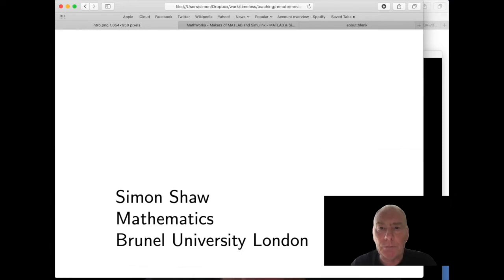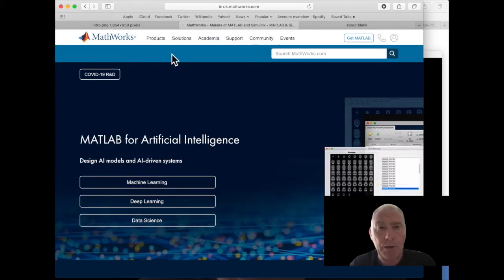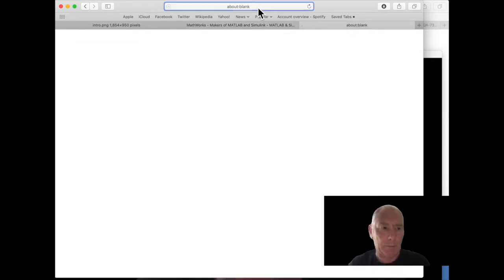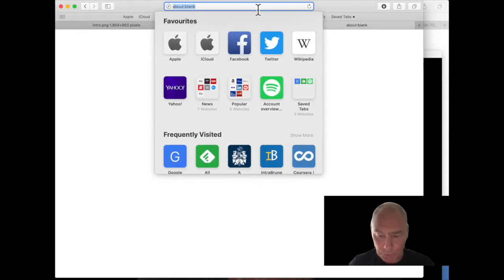At Brunel we make a lot of use of a program or programming language and environment software environment called MATLAB and it's made by this company called MathWorks. Now this is quite an expensive product. At university you don't worry about the expense because the university pays for it but at the moment you probably don't have access to this. So instead we're going to use a free version of MATLAB, an open source version called Octave.